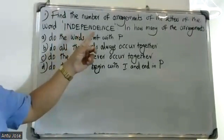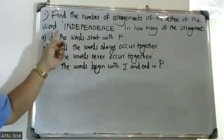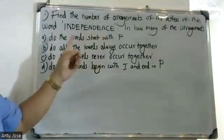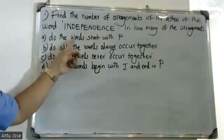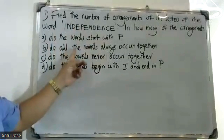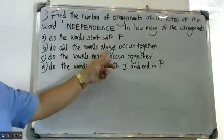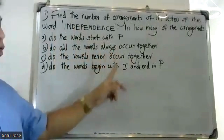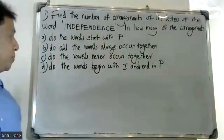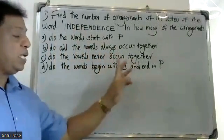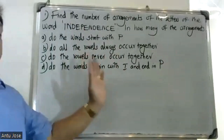Find the number of arrangements of the letters of the word INDEPENDENCE. In how many of the arrangements do the words start with P? Do all the vowels always occur together? Do the vowels never occur together? Do the vowels figure with I and N in P?